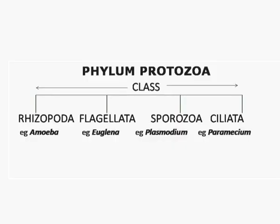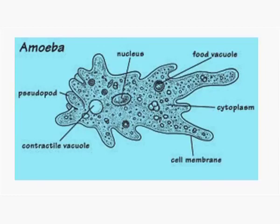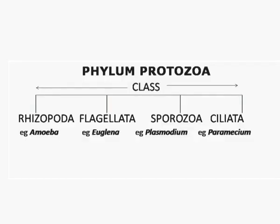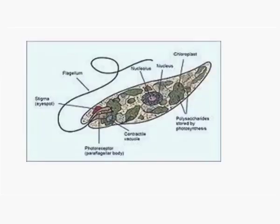Phylum Protozoa is divided into four classes. Class Rhizopoda includes all those organisms which move about with the help of pseudopodia — for example, Amoeba. Class Flagellata, as the name suggests, includes all the organisms which move about with the help of flagella — for example, Euglena.